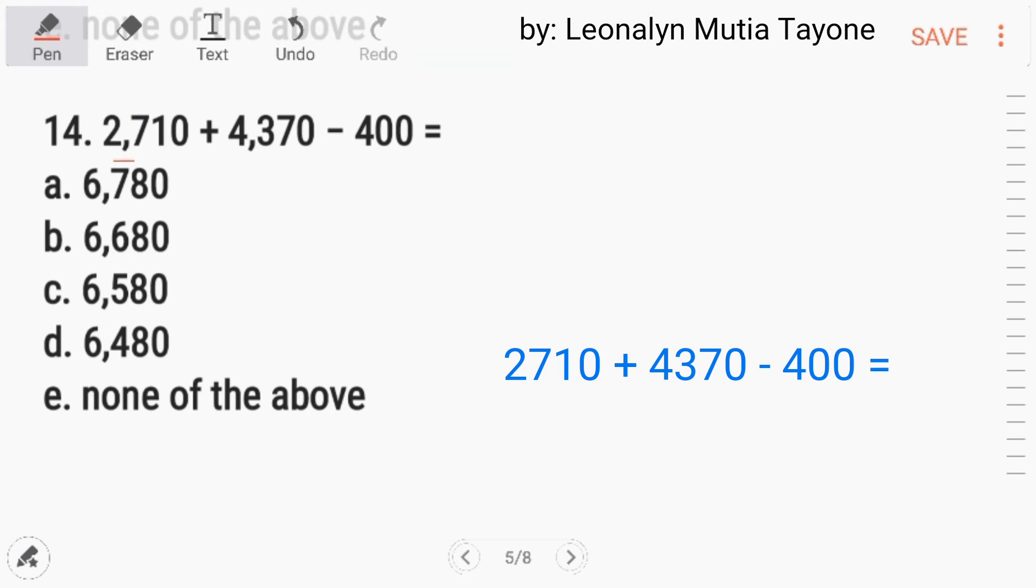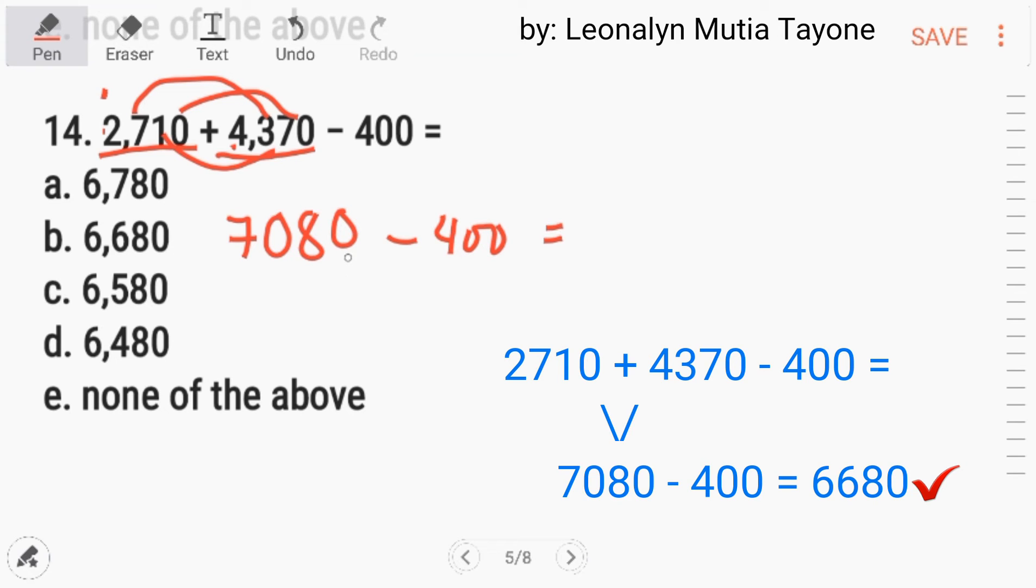Number 14, 2,710 plus 4,370 minus 400. So let's follow order of operation kasi dalawang operation na andito. Addition at saka subtraction. Whichever comes first from left to right. So given nauna ang addition. So we will do addition first. 2,710 plus 4,370. 1 plus 7 that is 8. 7 plus 3. I-carry mo yung isa. And this is 3 plus 4. And that is 7. 7,000 minus 400. Ito, kopyahin mo lang. So bali, dito tayo mag-focus yung 70 minus 4, 66. So the answer is letter B, 6,680.